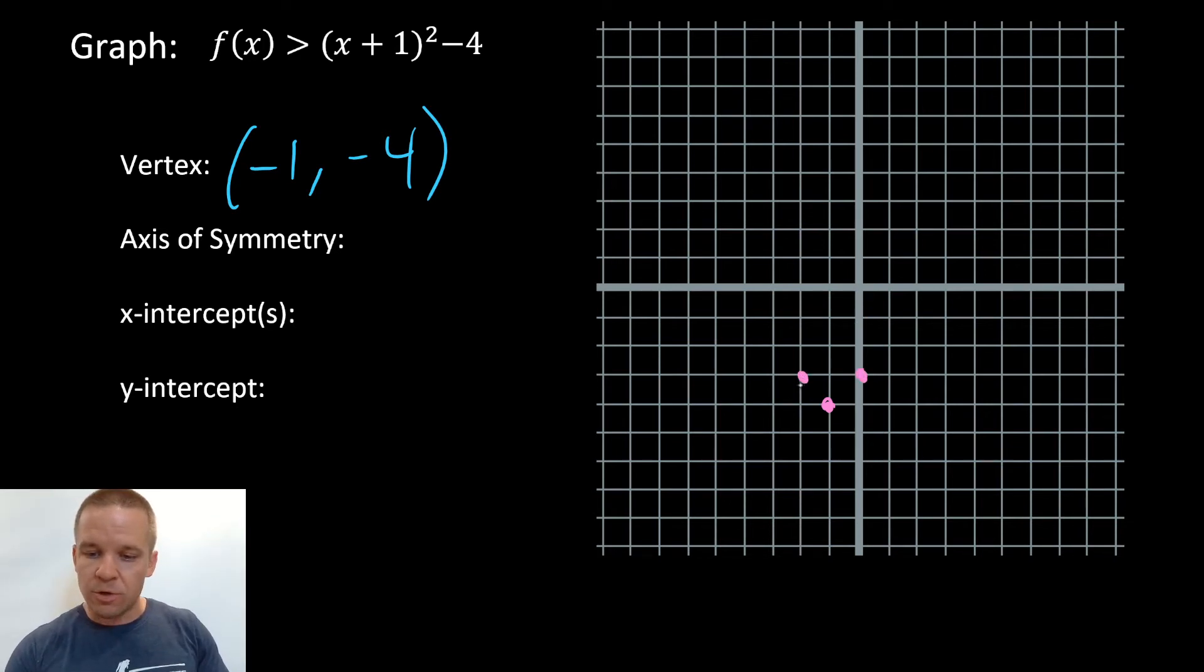And if you haven't noticed, when you're graphing quadratics, there's a pattern when the lead coefficient is 1. It's up 1 over 1, then up 3 over 1. Up 3 over 1.